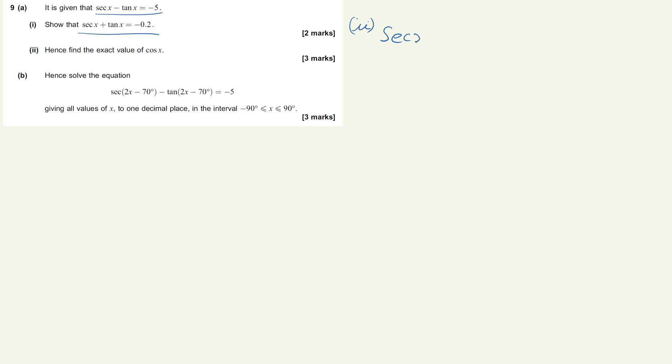So I've got sec x minus tan x equals minus 5, and I've got sec x plus tan x equals minus 0.2. So if we solve this as simultaneous equations, we're going to add the two equations together to give me 2 sec x is equal to these two things added together, which is minus 5.2.